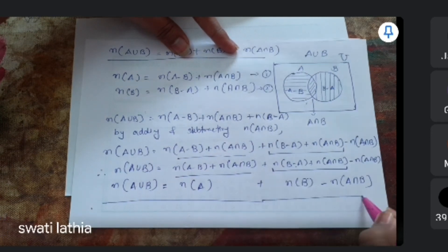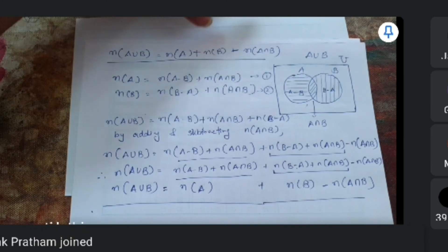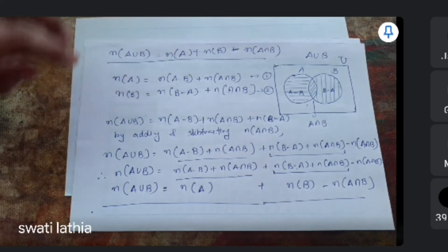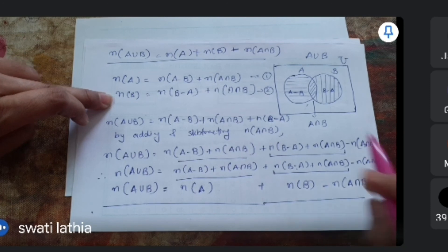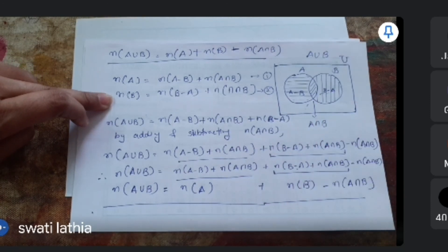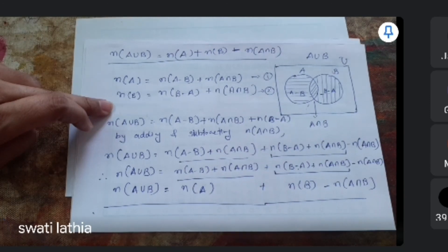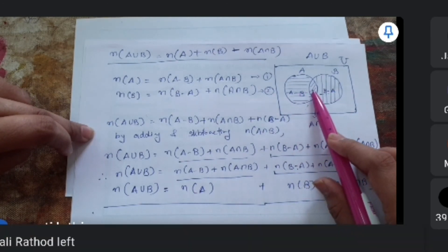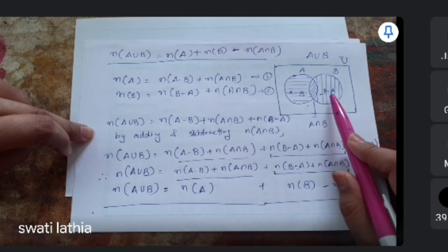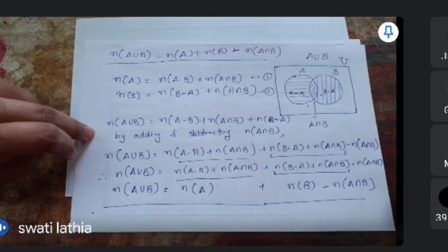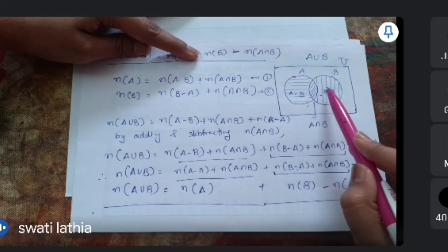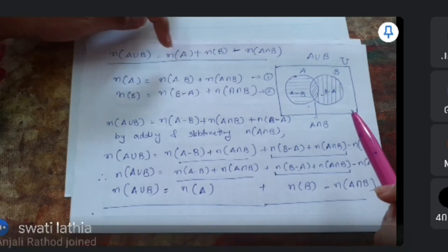This is what we wanted to prove. જે વસ્તુ આપણે prove કરવી હતી, એ રીતે આવી. n(A∪B) = n(A) + n(B) - n(A∩B). આ બે ભાગ A માં convert કર્યા, અને આ બે ભાગ B માં convert કર્યા.